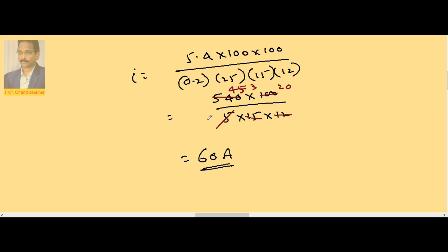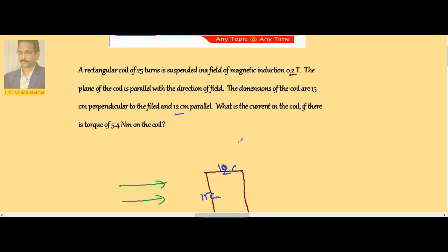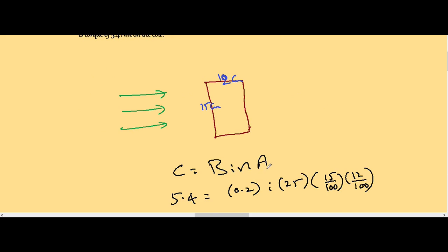Then the current passing through the coil is 60 amperes. Here the plane is parallel to the field direction, so the couple is B I N A.